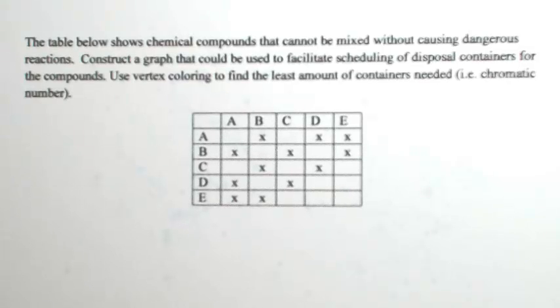The table below shows chemical compounds that cannot be mixed without causing dangerous reactions. Construct a graph that could be used to facilitate the scheduling of disposal containers for the compounds. Use vertex coloring to find the least amount of containers needed, i.e., the chromatic number.